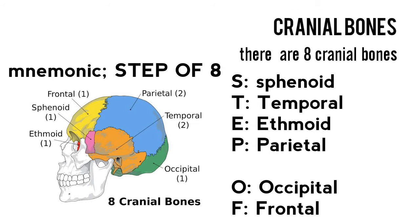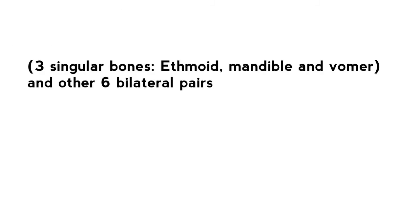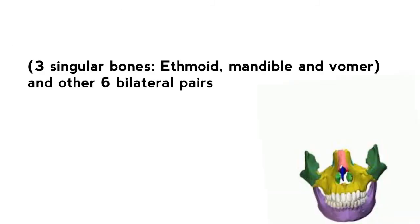The facial bones. Your face is formed by 15 facial bones: 3 singular bones — mandible, ethmoid, and vomer — and 6 bilateral pairs. Here's a mnemonic to help you remember them: "Viruses cannot make mare's pet zebralene."